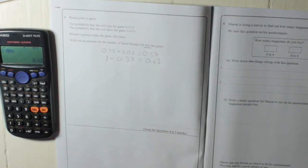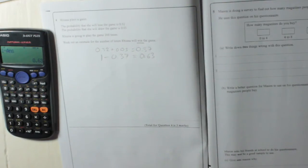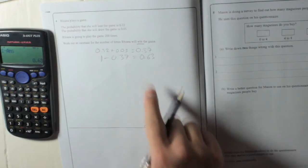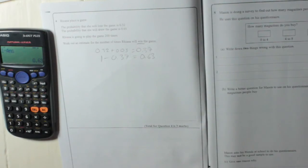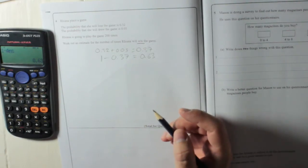So 0.63, remember, is a fraction. I know it's a decimal, but it's a decimal fraction. So if the probability that she wins is 0.63, if she plays 200 times, she will win 0.63 of the time.